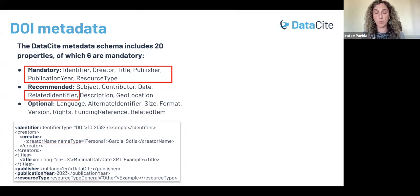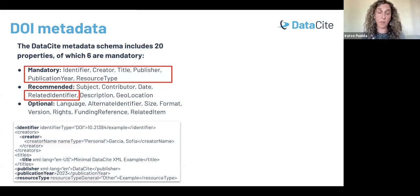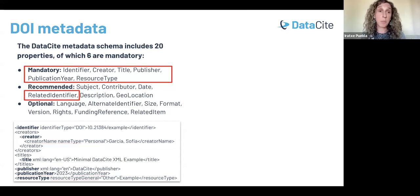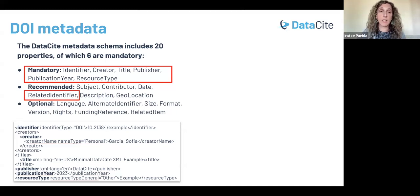Essentially, this designates the object that is receiving the DOI. Another property within the Datasite metadata that I wanted to mention, which falls under the recommended category, is the related identifier. I wanted to highlight this because I'll be coming back to it when we start talking about citations. The related identifier property enables creating relationships between the object receiving the DOI and another object that has an identifier.